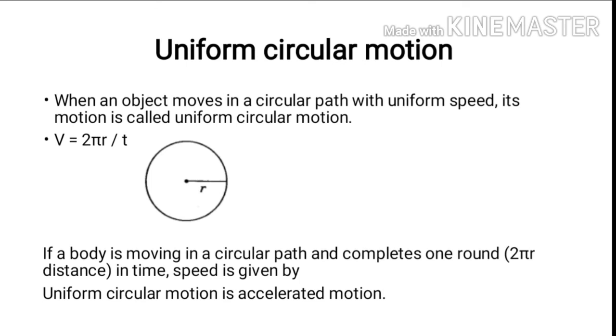Uniform circular motion. When an object moves in a circular path with uniform speed, its motion is called uniform circular motion. If a body is moving in a circular path and completes one round, it covers a distance of 2πr in time t. The mathematical expression of uniform circular motion is v = 2πr / t, where r is the radius of the circular path.